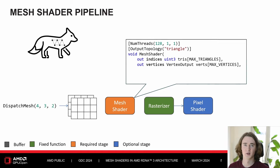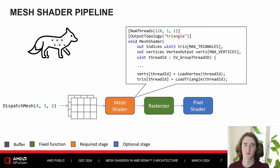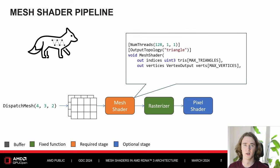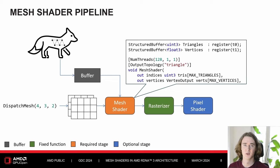Those output arrays are shared across the entire mesh shader thread group, meaning up to 128 threads can work together on creating the output. As the mesh shader employs a compute-like programming model, we can read from any number of buffers we like, and those buffers can have any format we like, giving us complete flexibility over how we design the input.